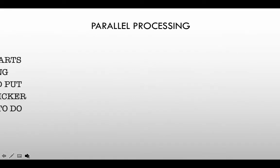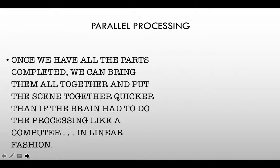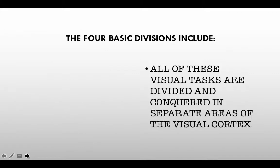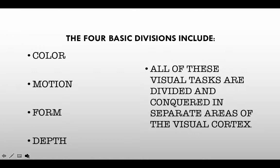So with parallel processing, when all these parts are completed, all that information is processed in a higher, more complex functioning area of the visual cortex where recognition can take place. We don't do it like a computer does, which is linear, because if you lose one aspect, you lose it all. When your computer freezes, it's not very pleasant. But in visual processing, if we lose one part, we might still be able to function — we just lose that one part. So all these tasks are broken down into simpler processes.